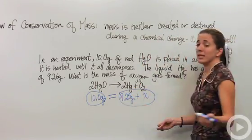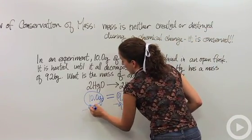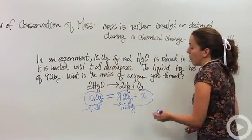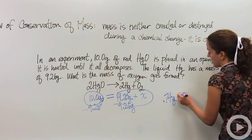We can just do a basic mathematical problem and subtract 9.26 from both sides, and we come up with 0.74 grams of oxygen gas given off.